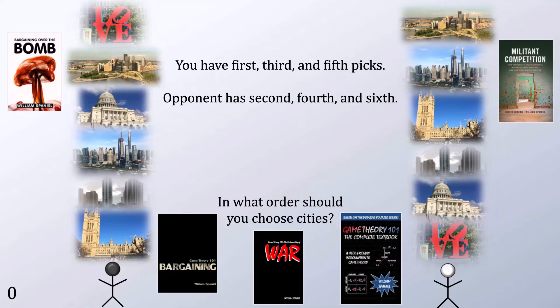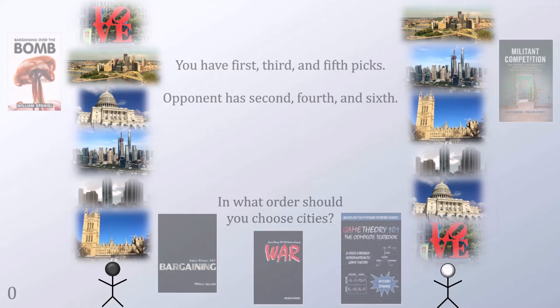You and your opponent may have an initial inclination to just draft according to your preferences. That would mean with the first pick you choose Philadelphia, making it impossible for your opponent to get Philadelphia. Then your opponent chooses Pittsburgh, making it impossible for you to get Pittsburgh. Then you take DC, then they take Shanghai, then you take Miami, forcing them to have London as their last pick.